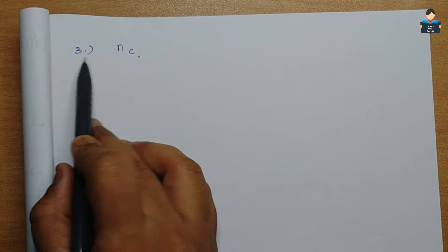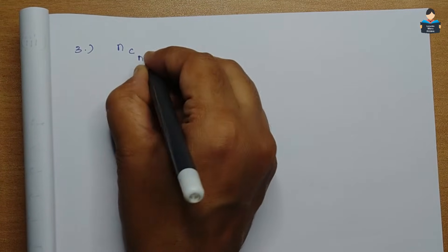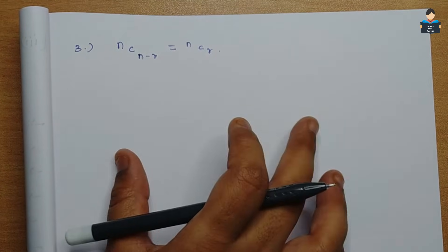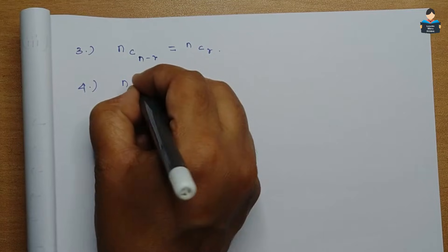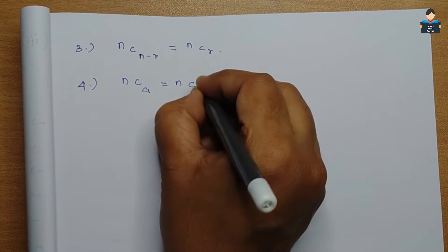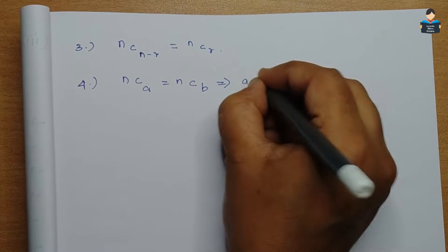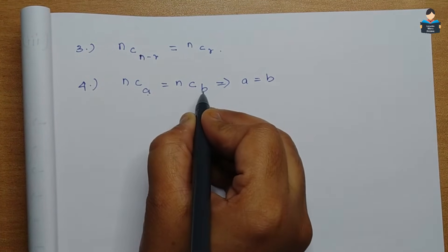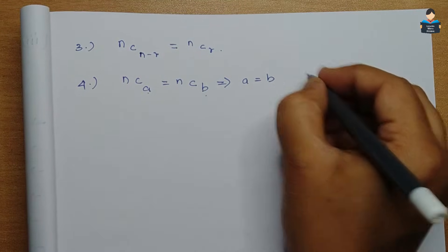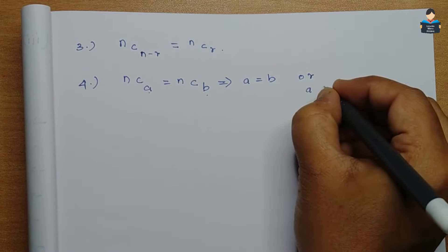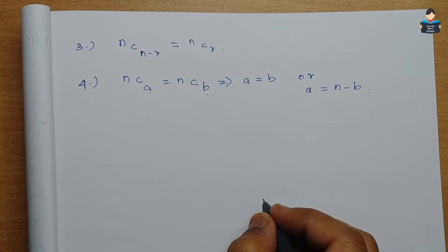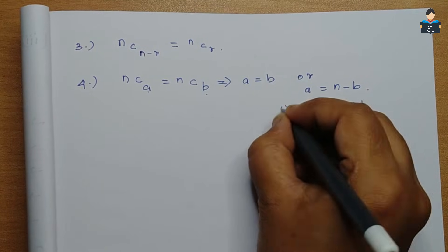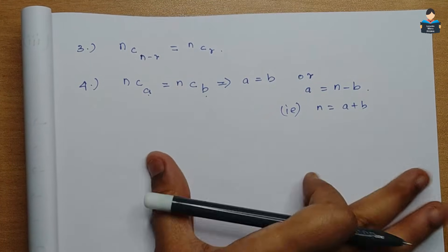The third property: nC(n−r) = nCr. The fourth property: if nCa = nCb, then this implies a = b, or a + b = n. These properties will be useful for solving the exercise sums.